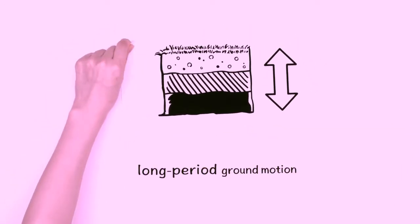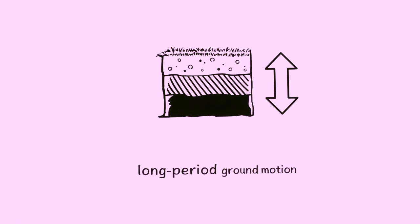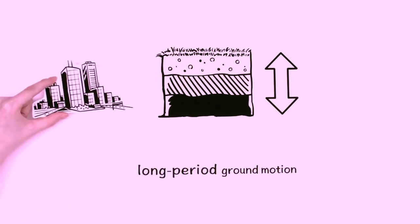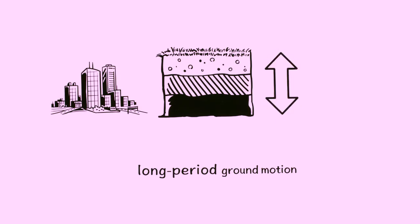The thicker the ground's sedimentary layers, the longer the period. Because cities are usually built on planes composed of very thick sedimentary layers, they often experience long period ground motion.